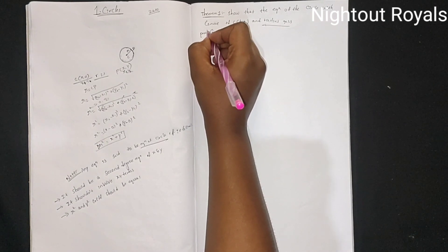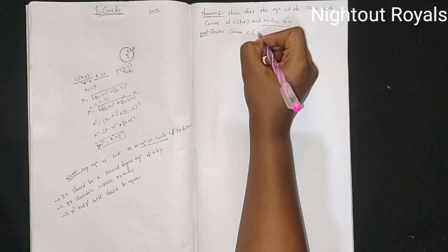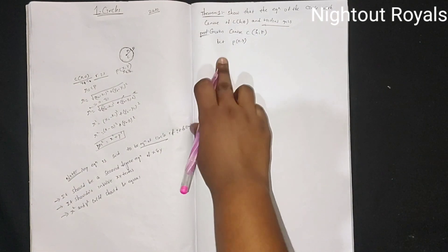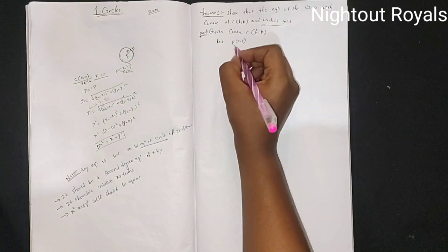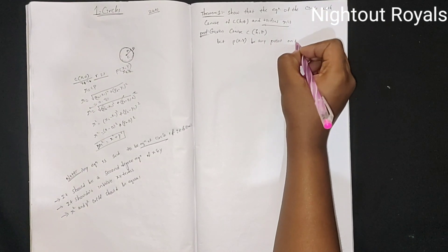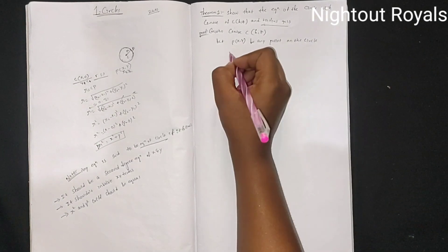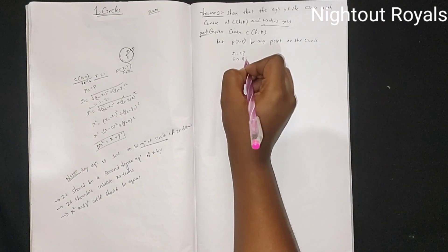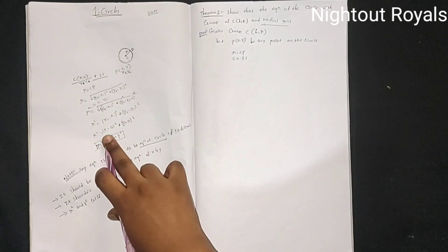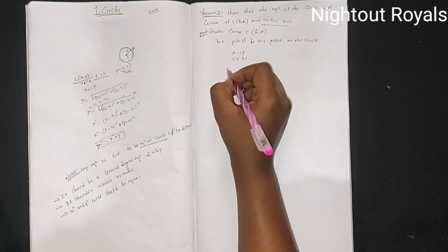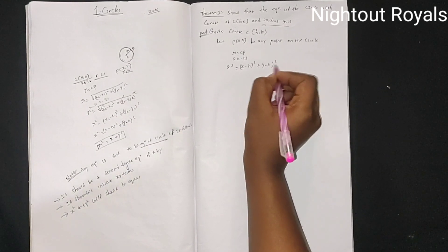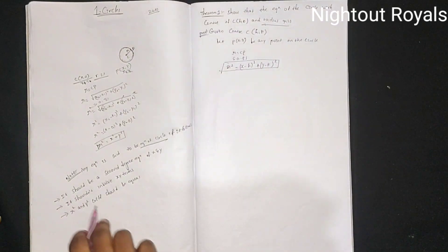Proof of Theorem 1. Given center C(h, k) and let P(x, y) be any point on the circle. Then r = CP. Squaring on both sides: r² = (x - h)² + (y - k)². This is the standard equation of a circle — the first theorem.